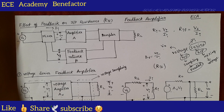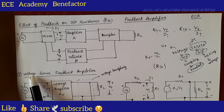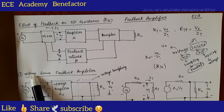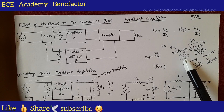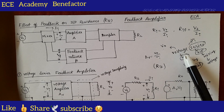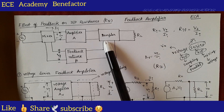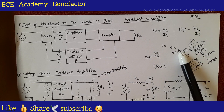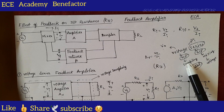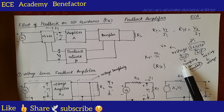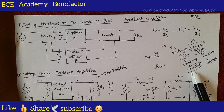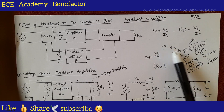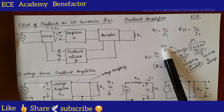Now, coming to the voltage series feedback amplifier — how do we select which basic amplifier to use? The first word tells about the output. What type of sampling is done at the output? Voltage sampling is done. If it is voltage sampling, we need a parallel connection at the output. So what is the output parameter? Voltage — that is V naught.